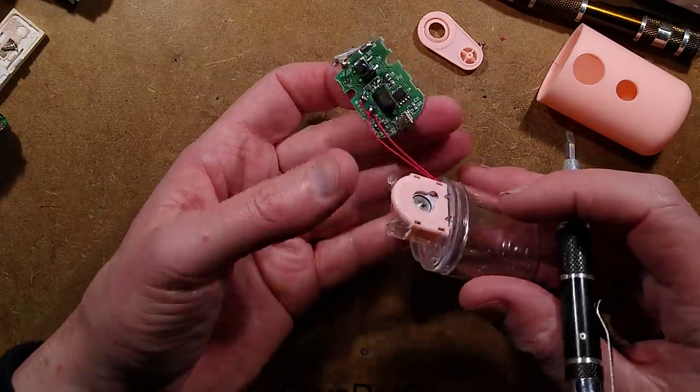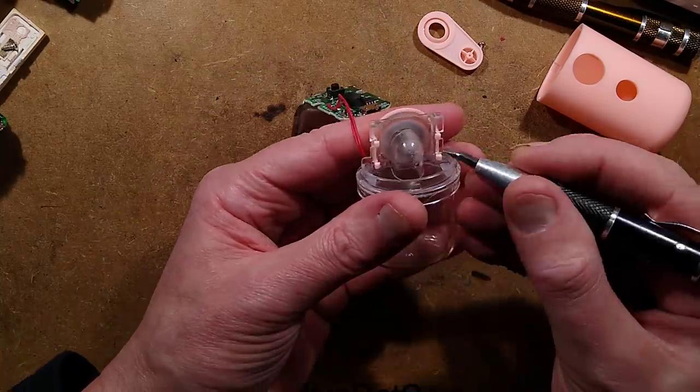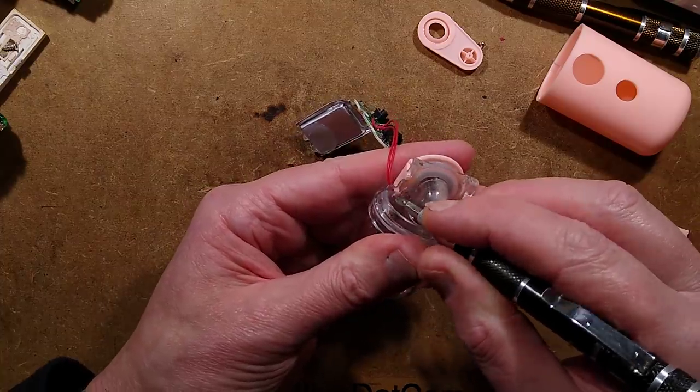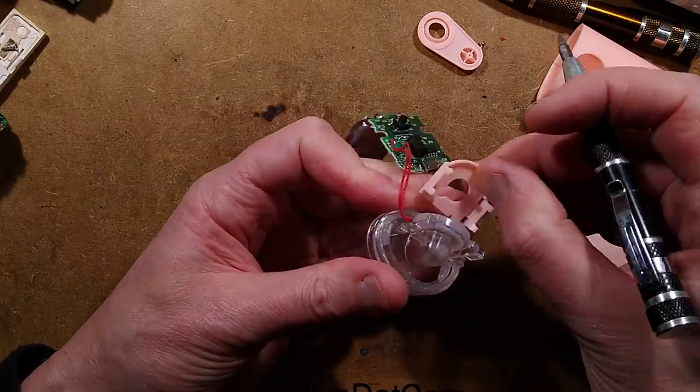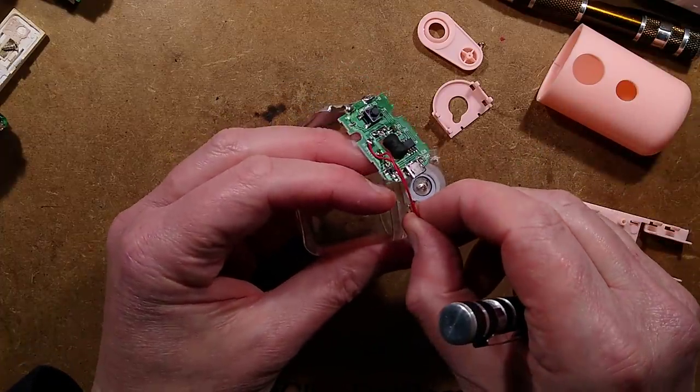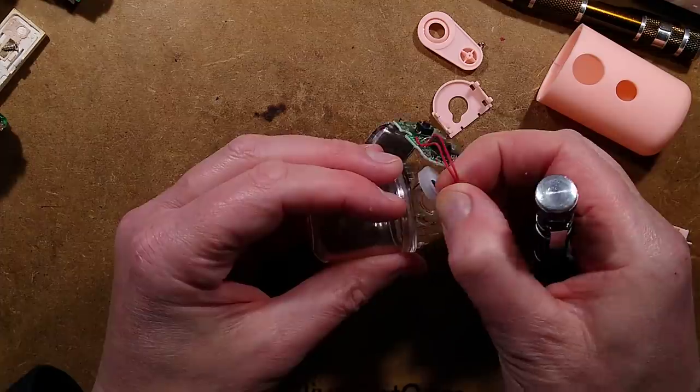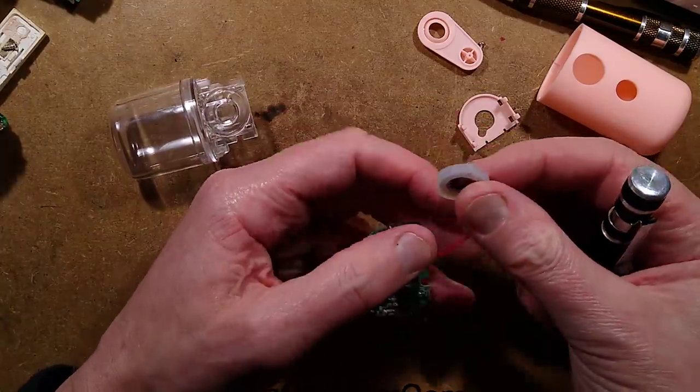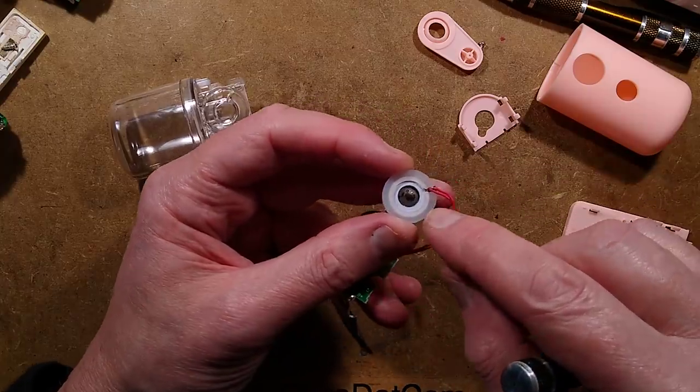What about the transducer? The transducer looks as though it's clipped on as well, with these little tags. So that cover comes off. And then this, oh, let's maybe not pull the wires off, is a fairly standard ultrasonic transducer. It's the type that has the, let's brighten this image up a little bit.